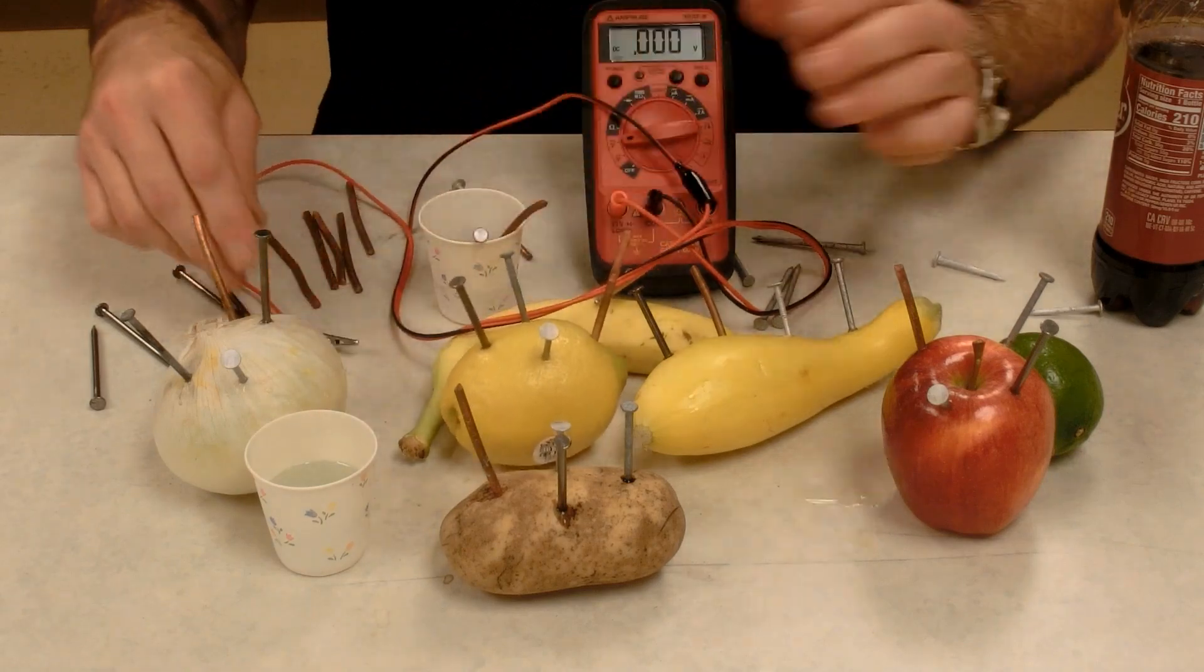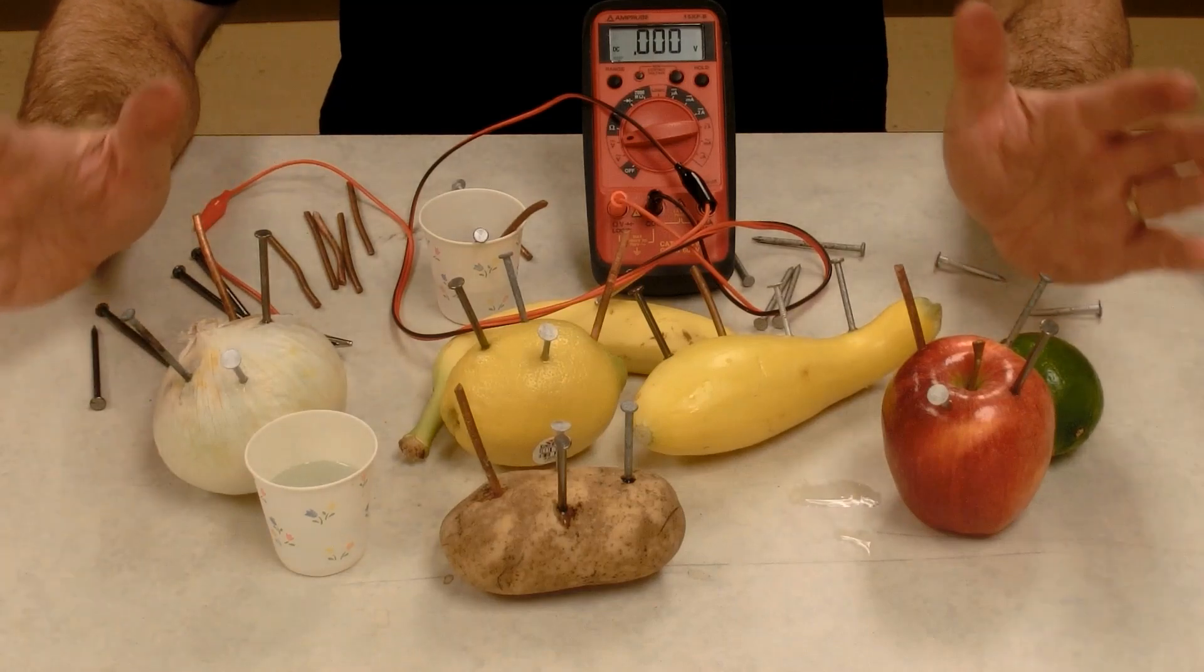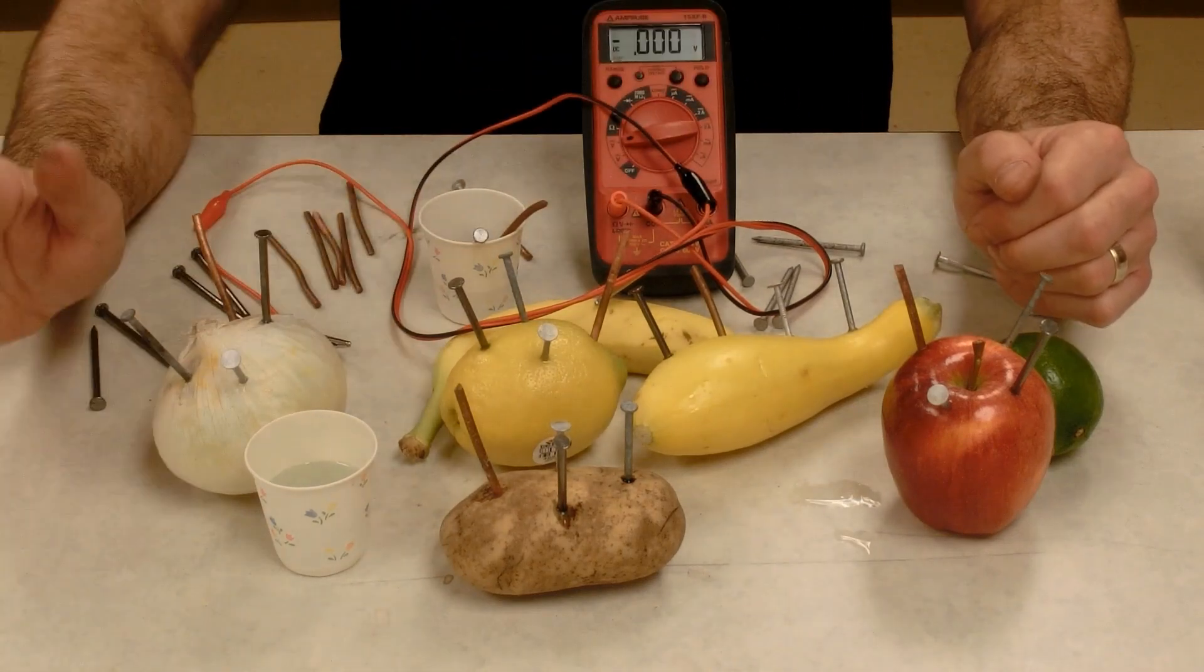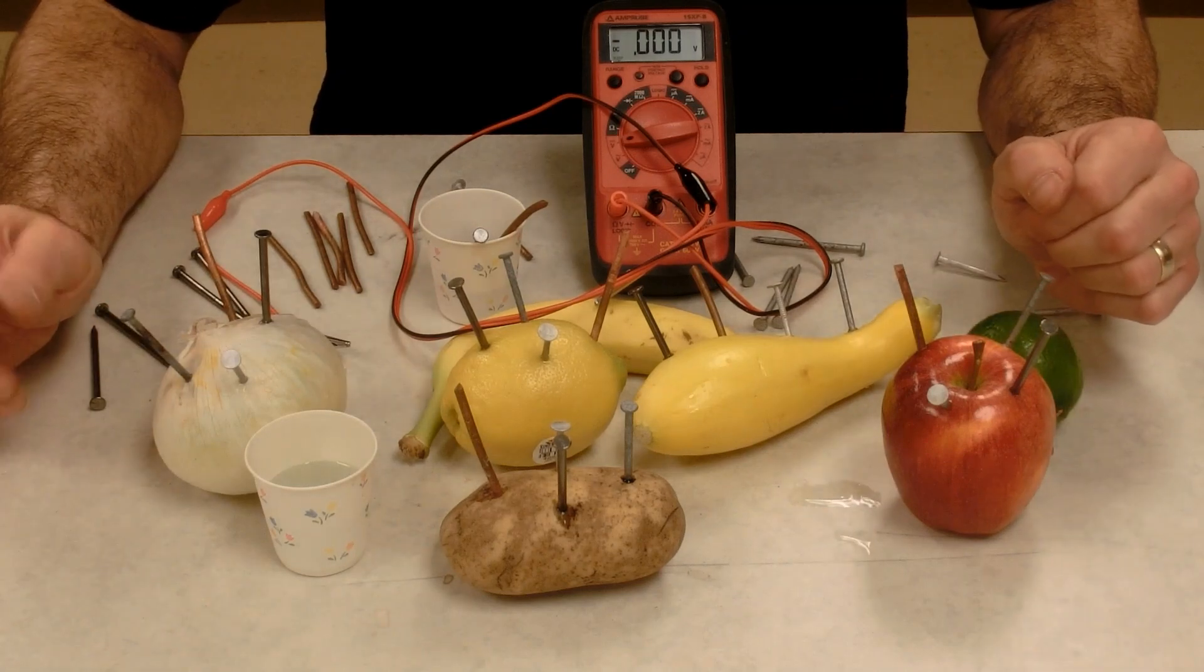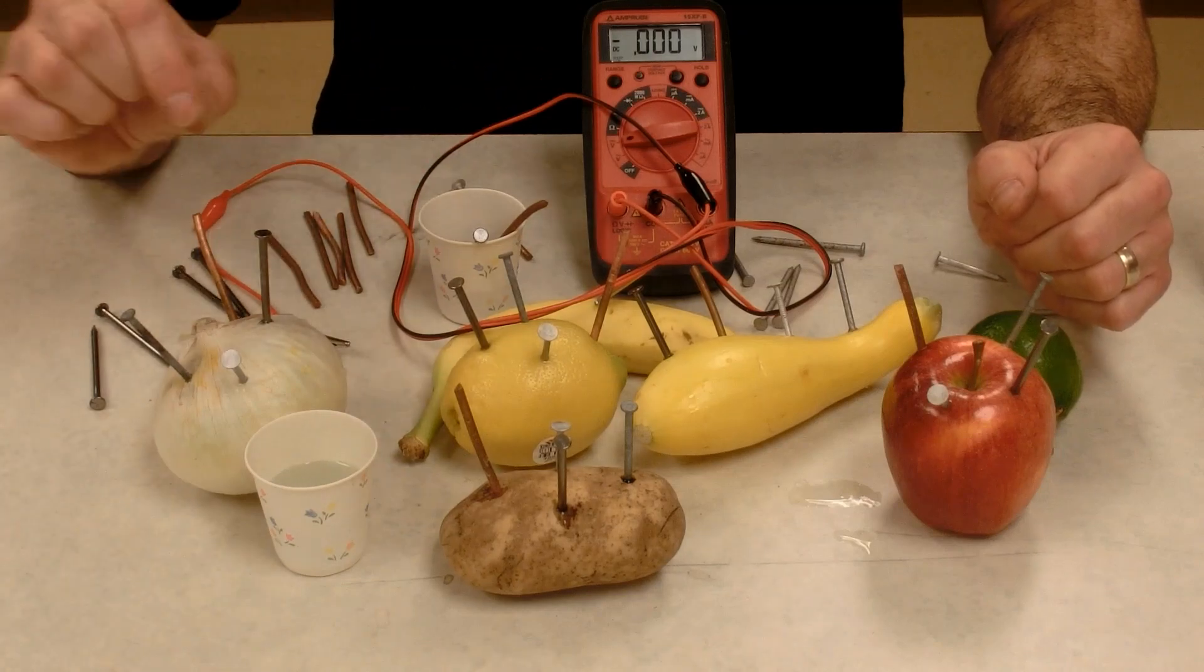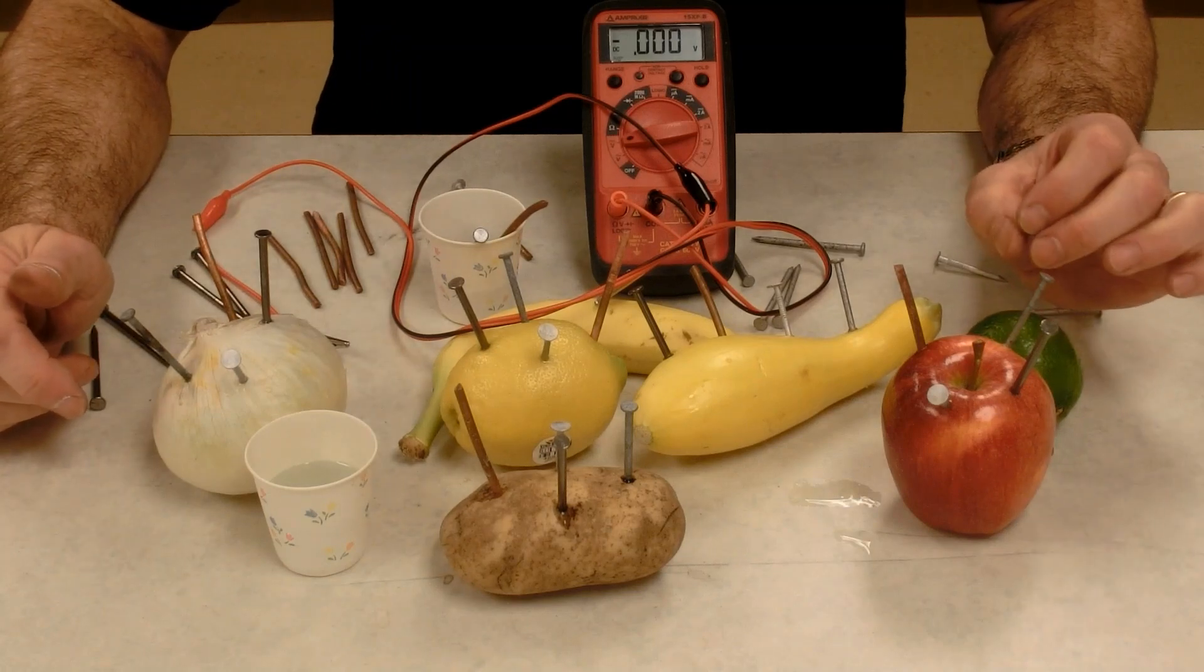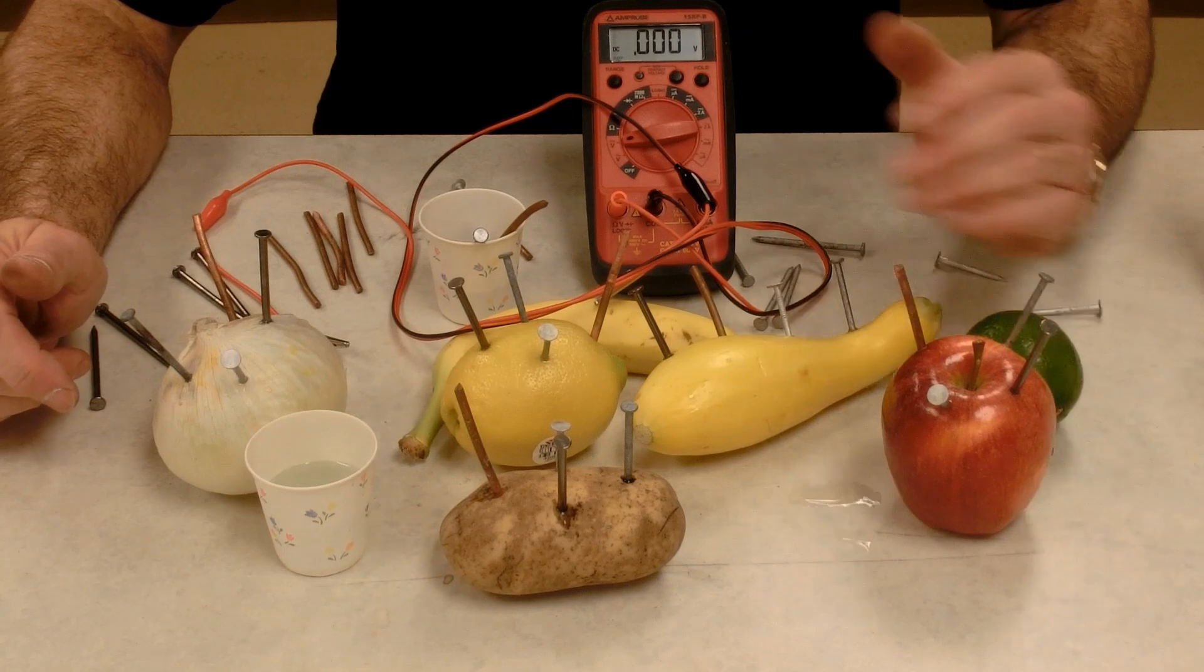So what we find when we do this is that different combinations of metals and electrolytes give us different amounts of voltage. In examining these, with these materials, it does appear that the combination of metals makes a bigger difference than the electrolyte. The copper and zinc were giving us the highest voltage no matter what they were in. The aluminum and steel gave us the smallest amount of voltage no matter what they were in.